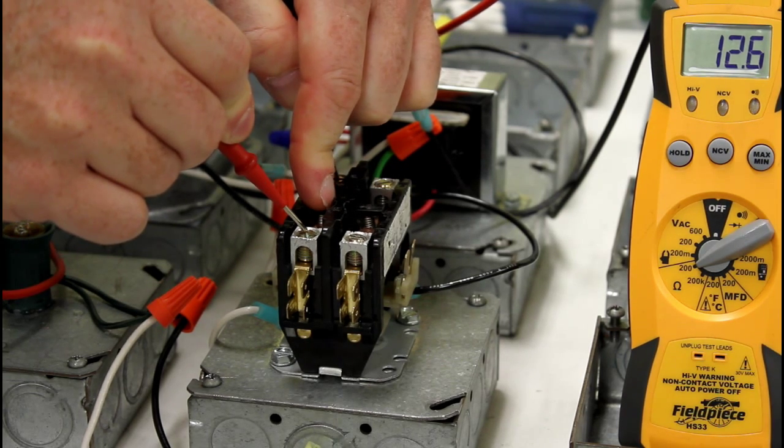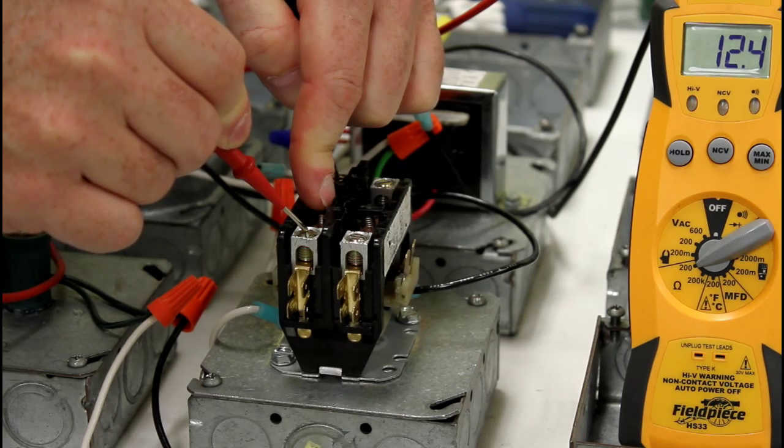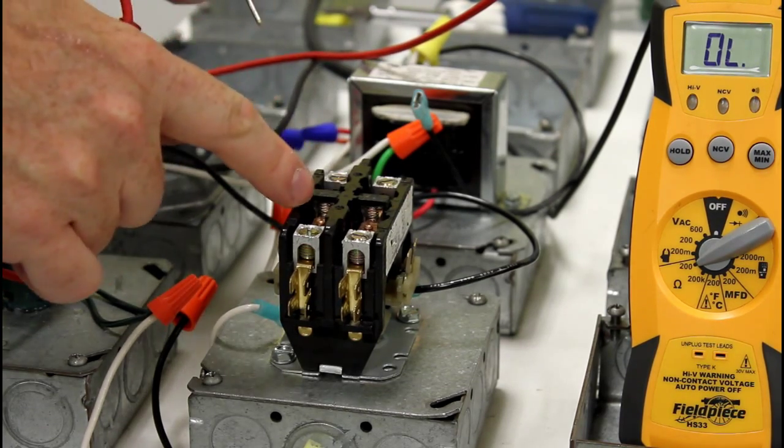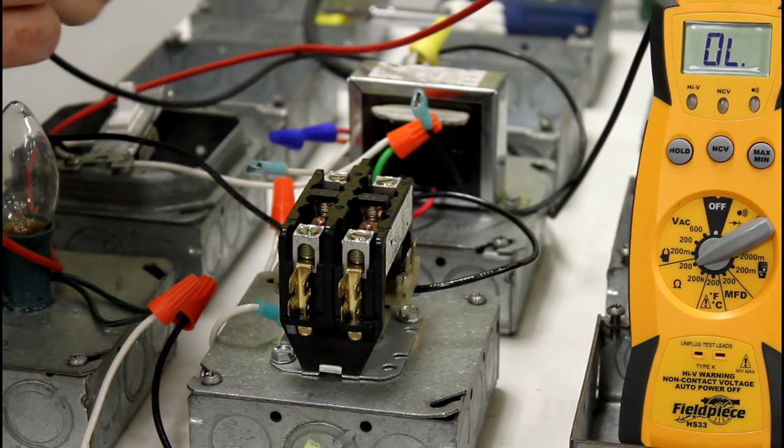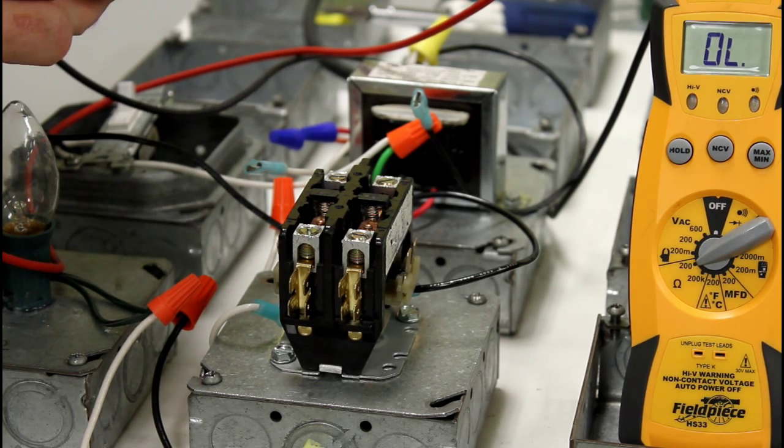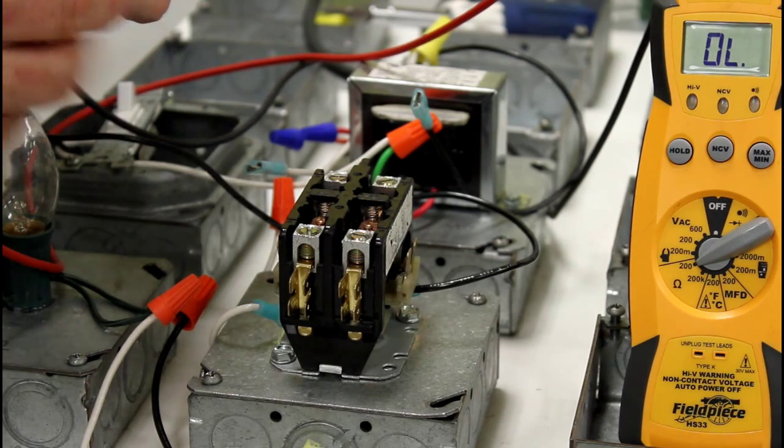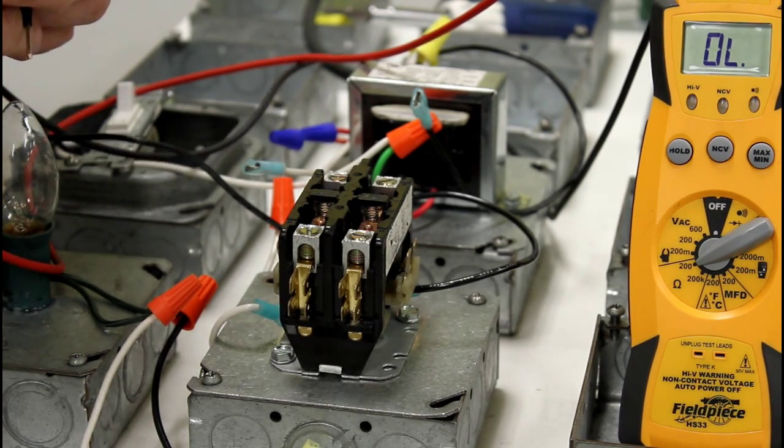I'm going to do the same thing here on contact two. See this one got a little bit more resistance than the last side. So this side's got a little bit more wear and tear than the other side does. Once again, once you start getting more than a couple of ohms, you really should change out the contactor.